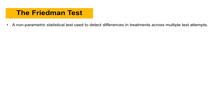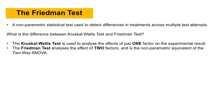Friedman test is a non-parametric statistical test used to detect differences in treatments across multiple test attempts. You might be wondering what is the difference between Kruskal-Wallis test and Friedman test. Kruskal-Wallis test is used to analyze the effects of just one factor on the experimental result, whereas the Friedman test analyzes the effect of two factors and it is known as the non-parametric equivalent of the two-way ANOVA.